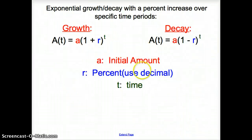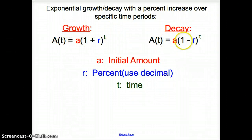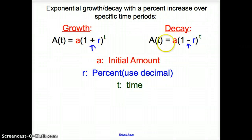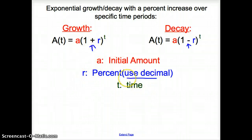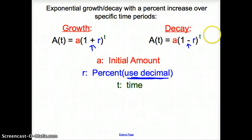Now one more: we have exponential growth or decay with a percent increase over a specific time period. For growth you use a plus sign; for decay it's a minus sign. If you grow, you add; if you decay, you get smaller, so you subtract. Our variables don't change between them: A is always your initial amount, r is your percent — but please be very careful, use the decimal for the percent — and T is time.